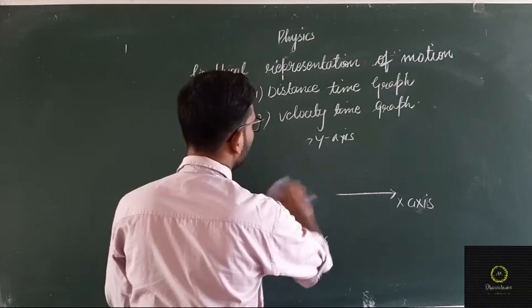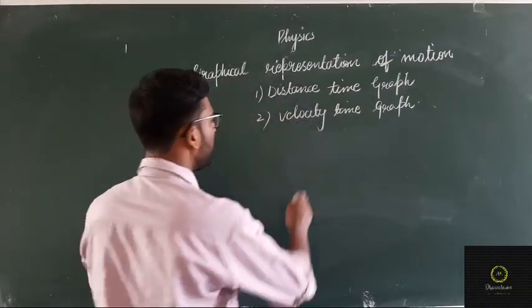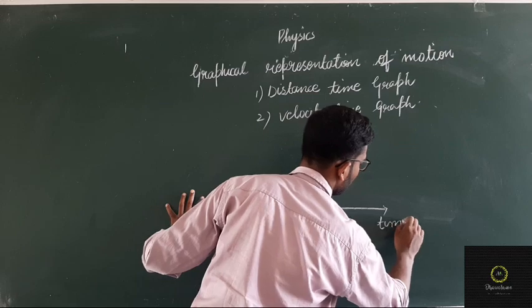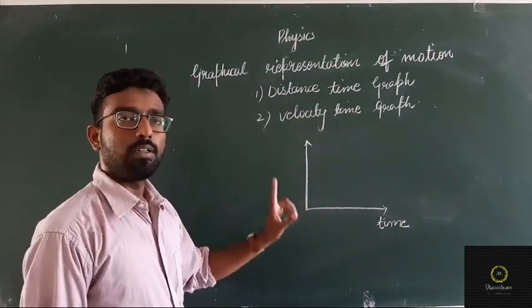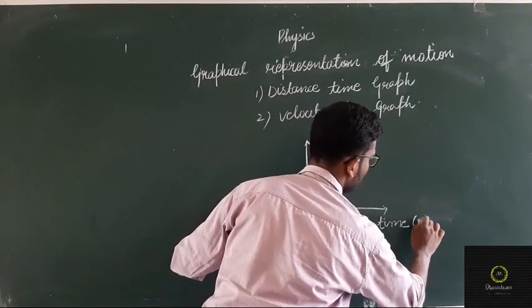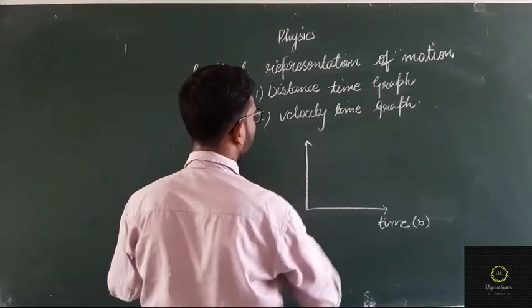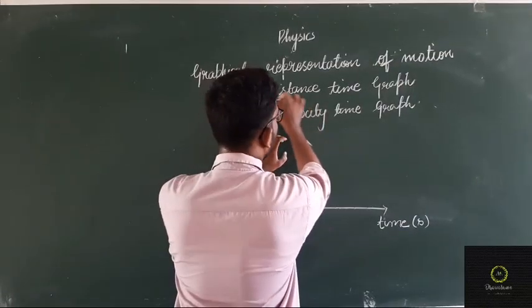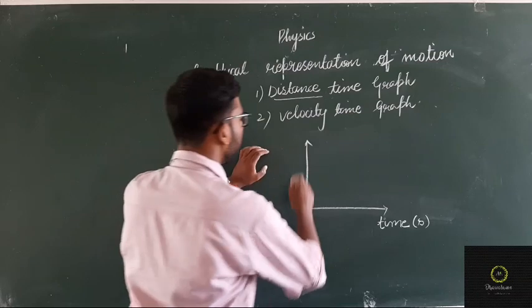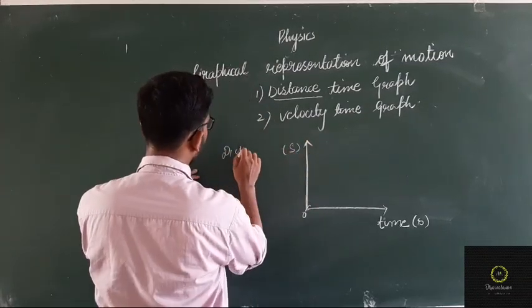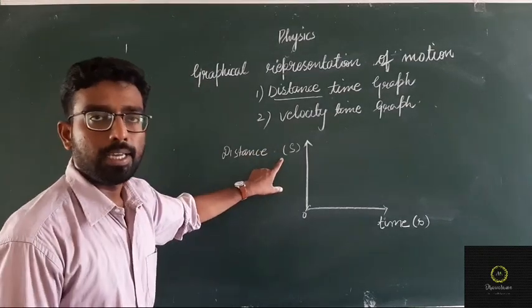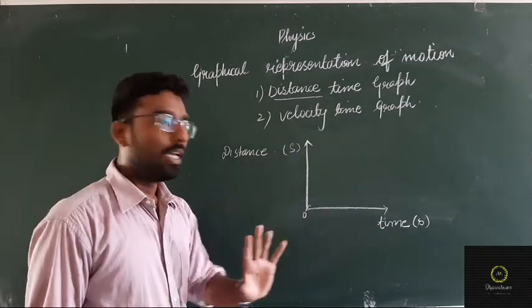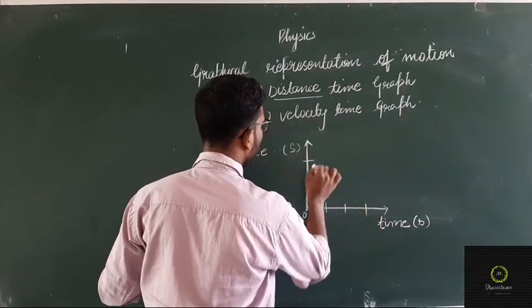Now what will be the nomenclature of these axes? On the x-axis we will write down time, in seconds, which is the SI unit of time. On the y-axis, in the case of a distance-time graph, we write distance — denoted by S. So on the y-axis there is distance, and on the x-axis there is time, and we will mark different coordinates on these two axes.